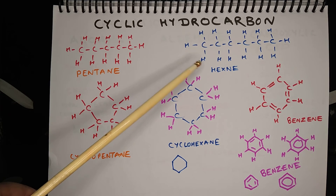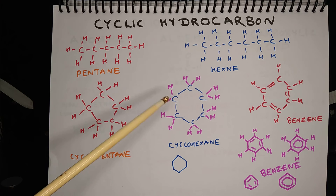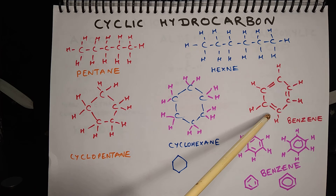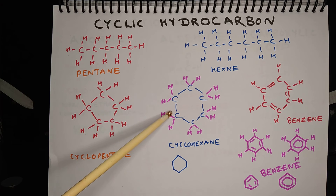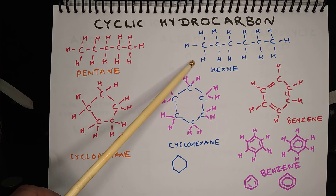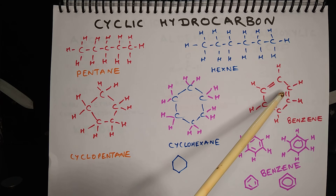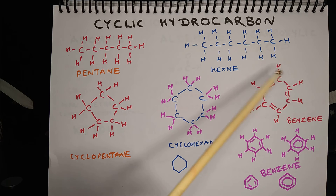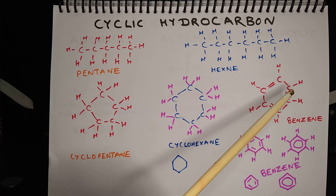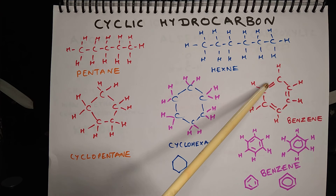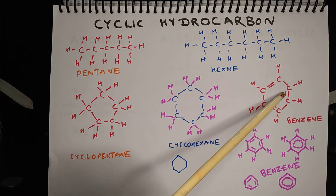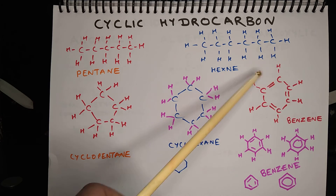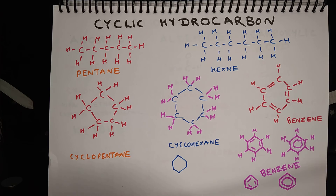Till now all the bonds are single bonds, but in this case we have C6H6, C6H12, and C6H14. What you will notice is that alternate bonds in the carbon ring are double bonds — double bond, single bond, double bond, single bond, double bond, single. So this compound with alternating double bonds in a six-carbon ring is called benzene, C6H6.